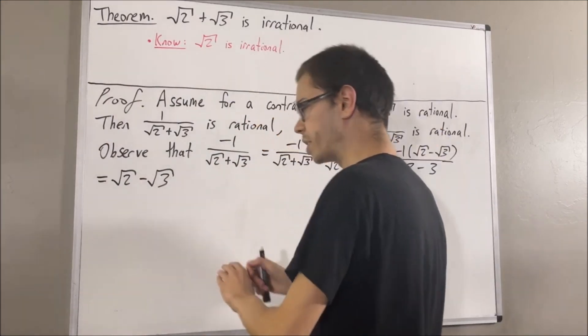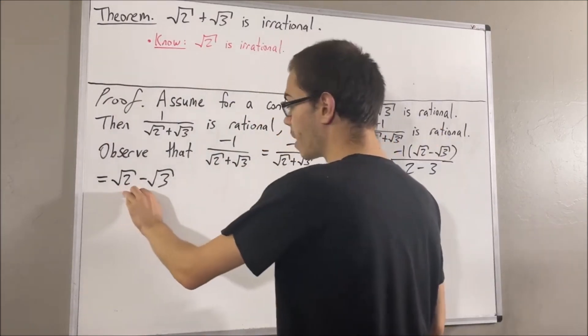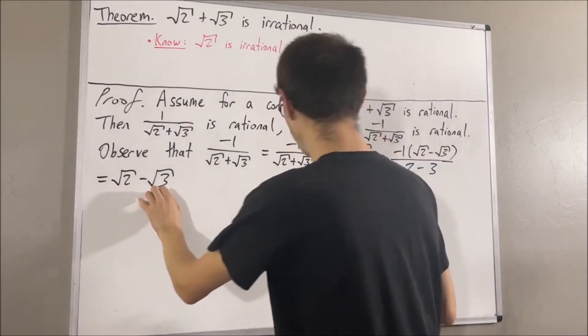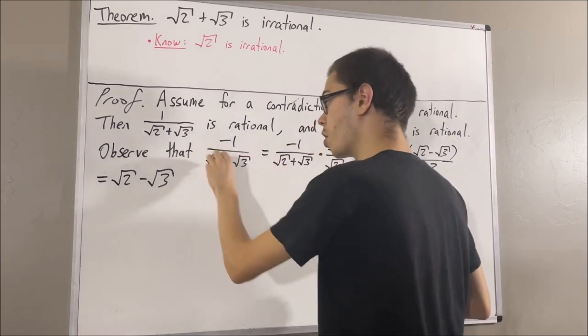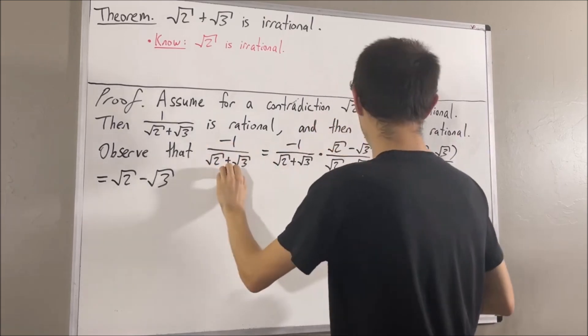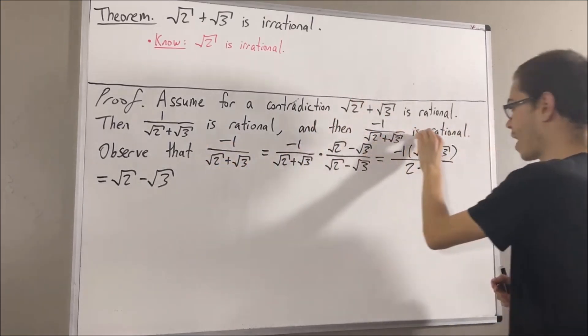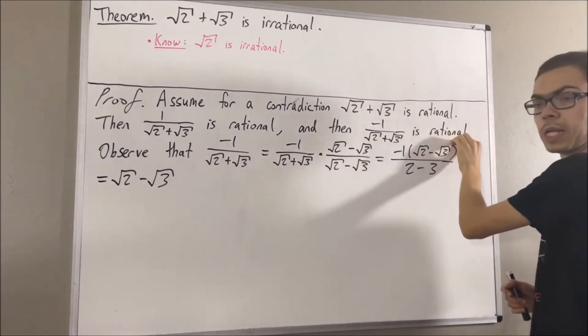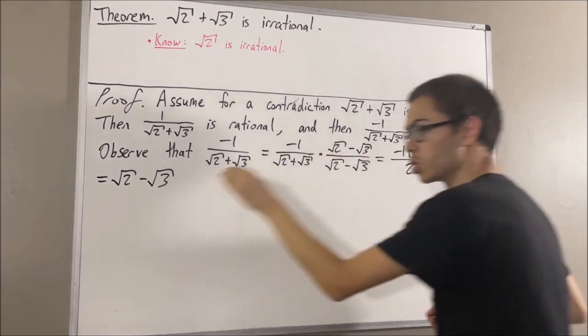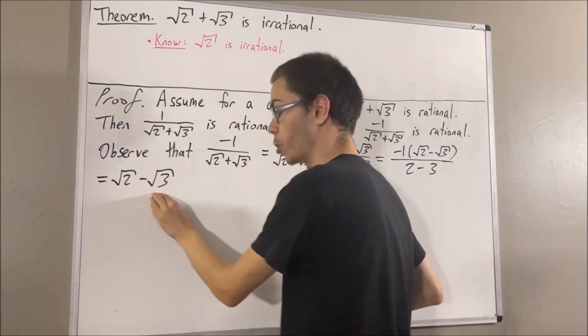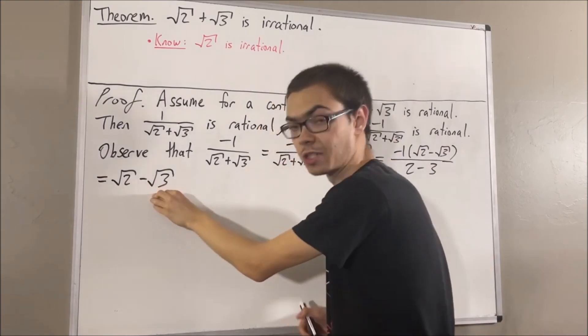So we see that square root of 2 minus square root of 3 is equal to a number which we know is rational. Therefore, square root of 2 minus square root of 3 is rational.